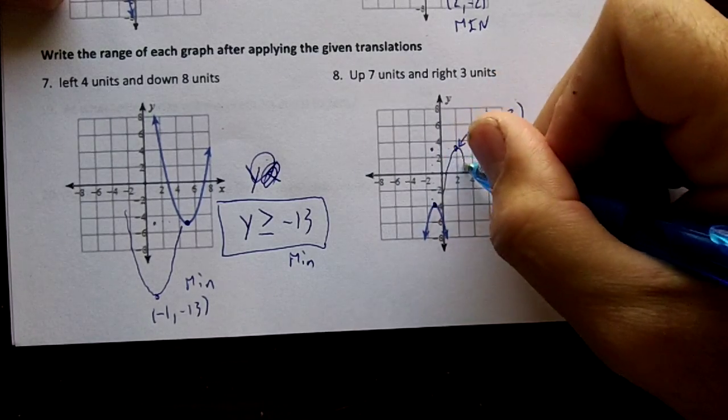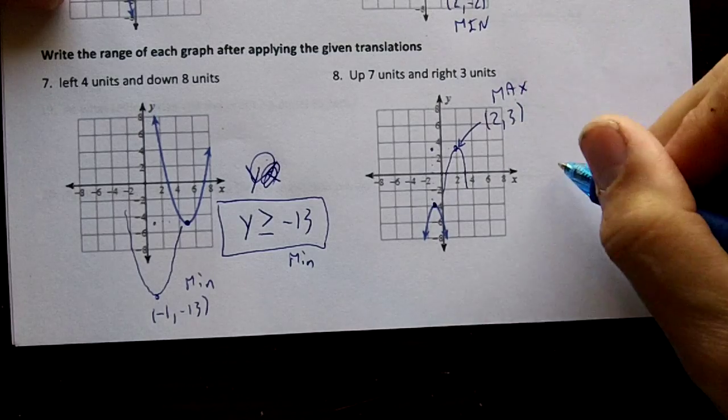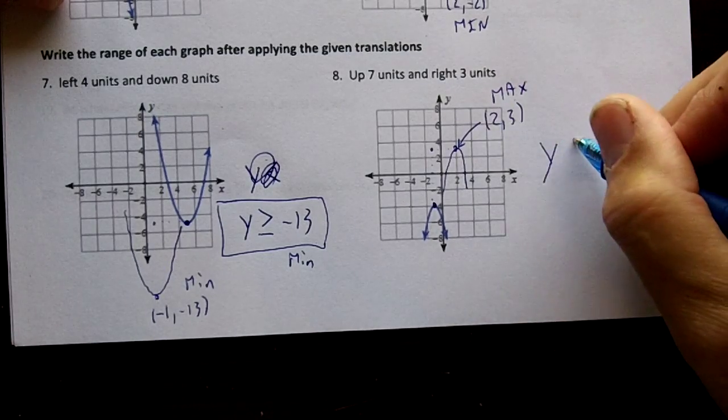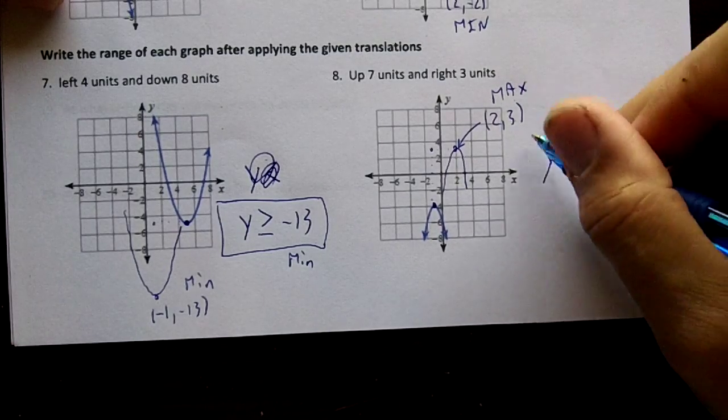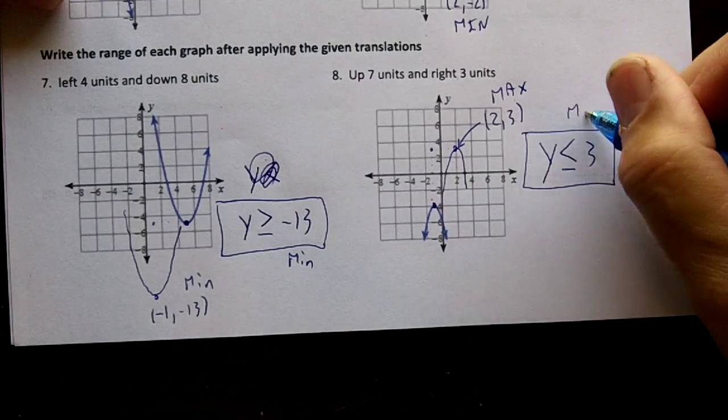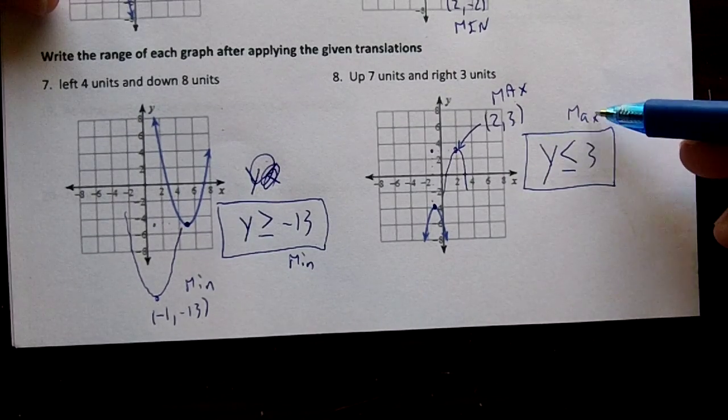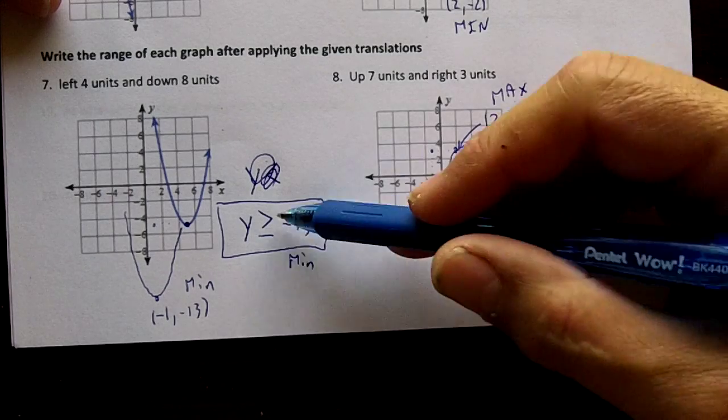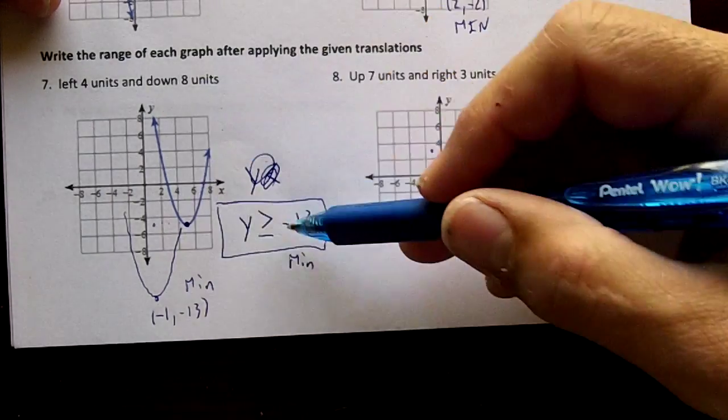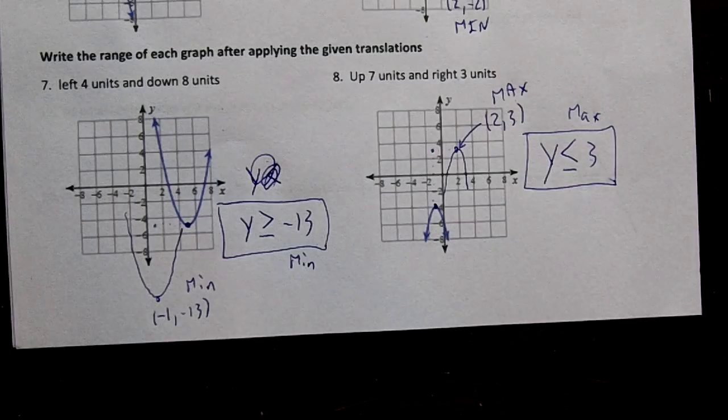And it would look like this, and it would be a maximum value. So our range would be y less than or equal to three. This would be a maximum value. Remember, a maximum value means you're going to have y's less than the maximum. A minimum value means you're going to have y's greater than or equal to the minimum.